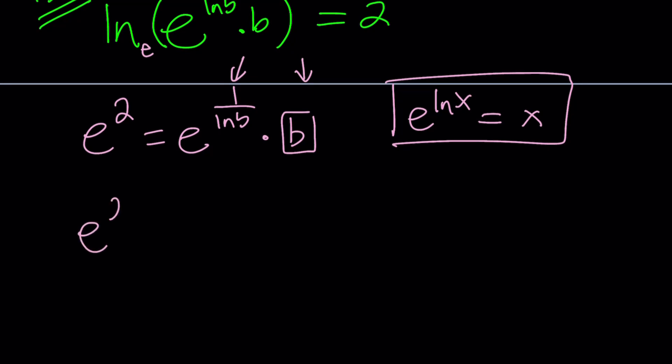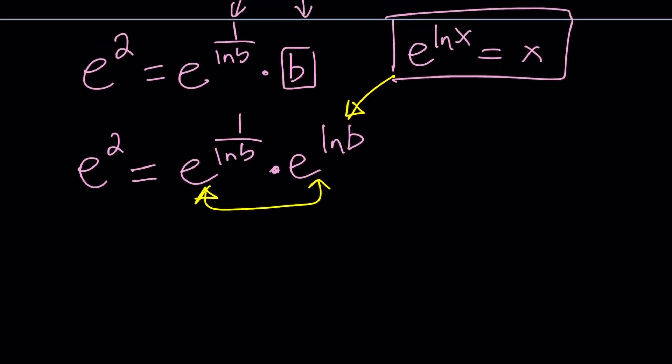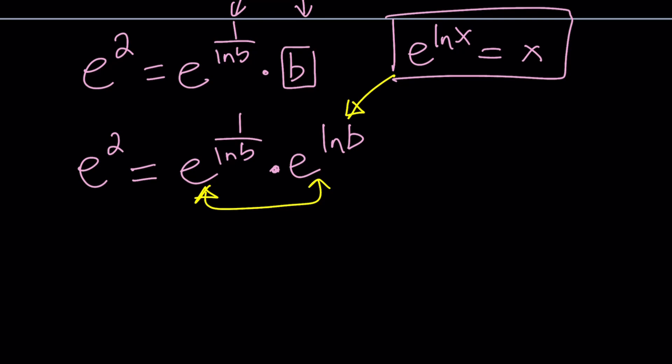Let's go ahead and write the b as e to the power ln b. And then we get the same base, which is nice, because now we can go ahead and combine these two things. With an important identity, by doing a little bit of a trick, we can make this more manageable. Let's go ahead and add the exponents. We get e to the power 1 over ln b plus ln b equals e to the 2.